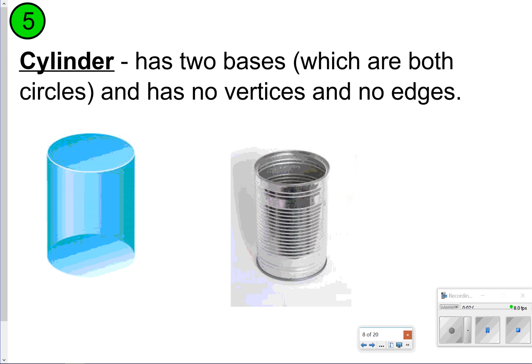Number five is a cylinder. You might want to think about this as a soup can or a soda can. This has two bases — both are circles. It has no vertices and no edges; there are no sharp corners or sharp lines. Go ahead and pause the video to write down number five, and once you're done, click play.